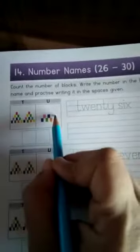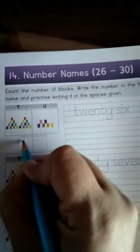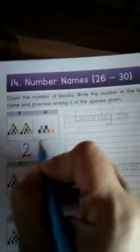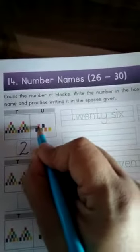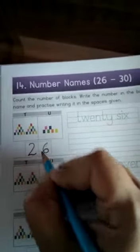So count the blocks first: 1 ten, 2 tens, and write down the number in the boxes given below. Now count these blocks: 1, 2, 3, 4, 5, 6. So 6. It means 26.